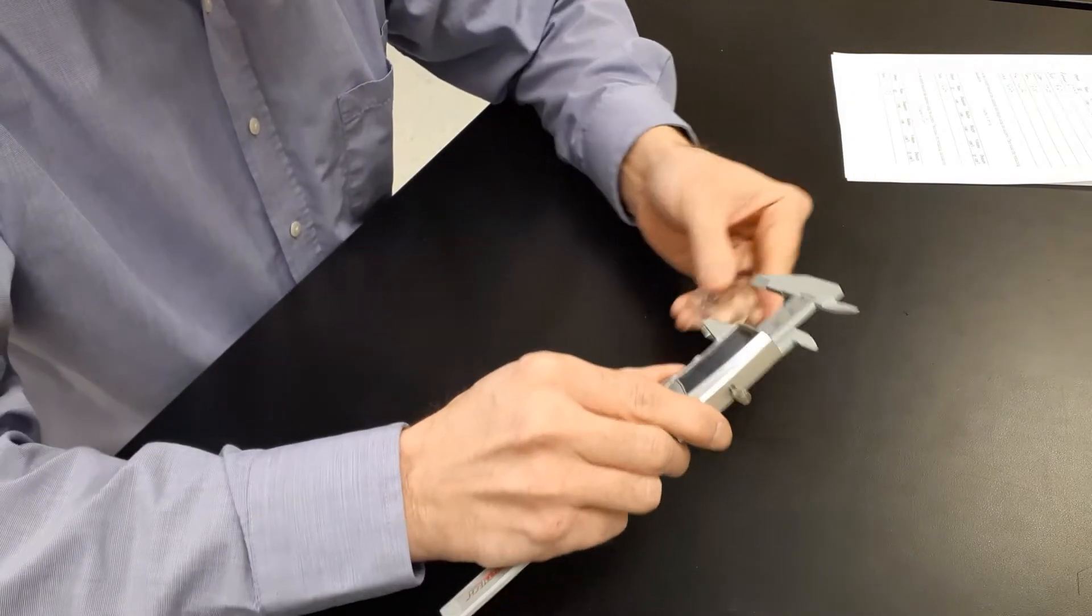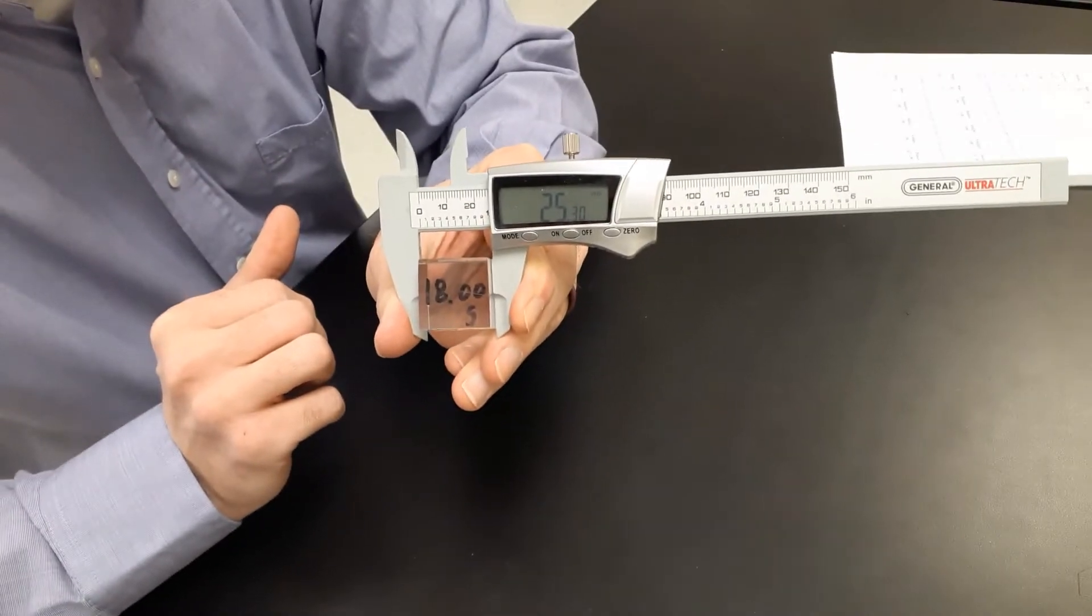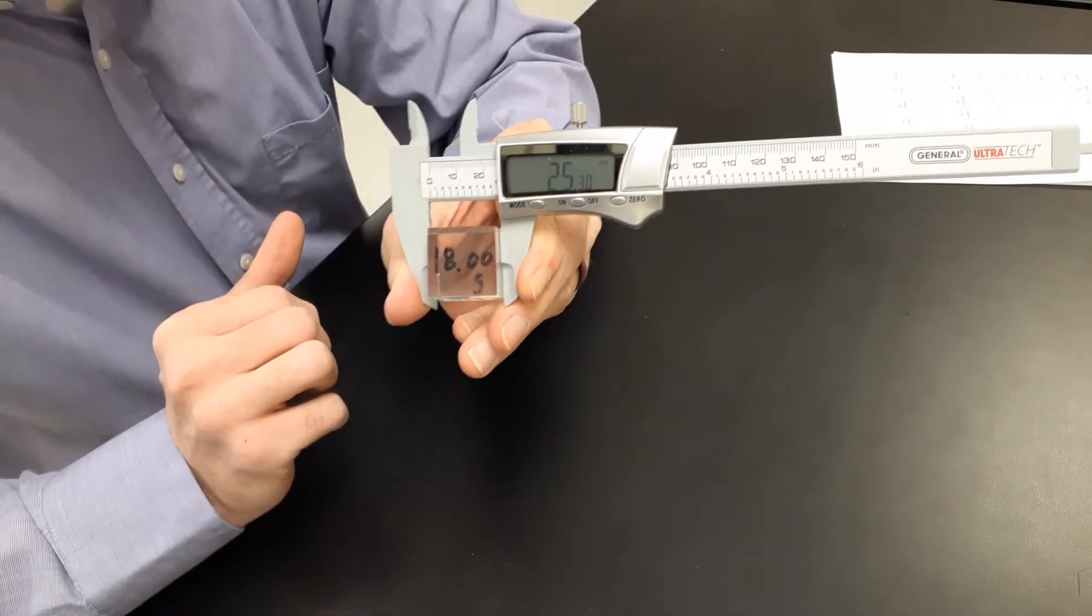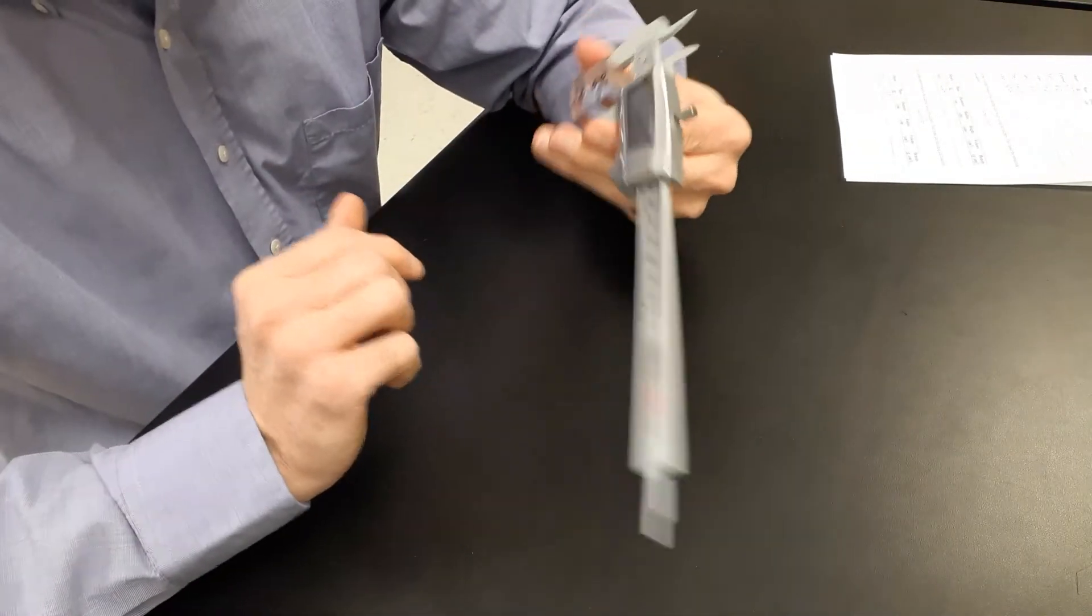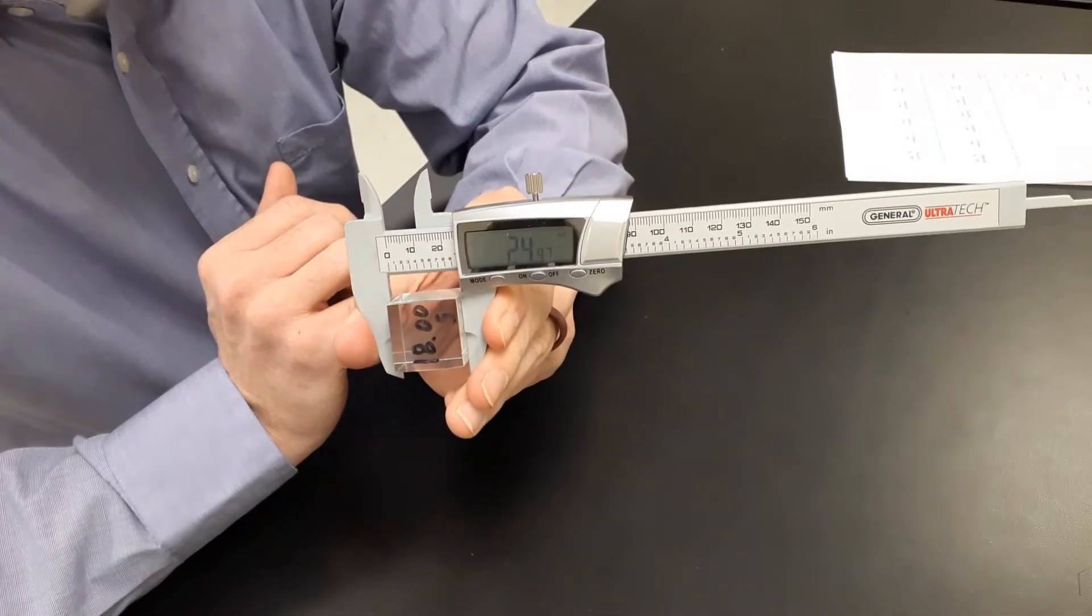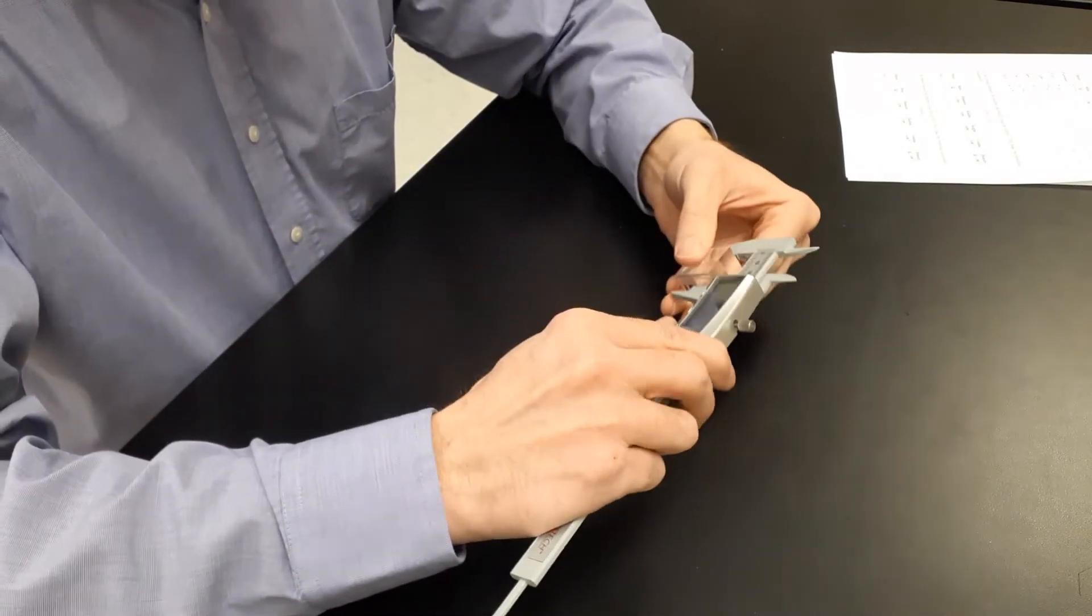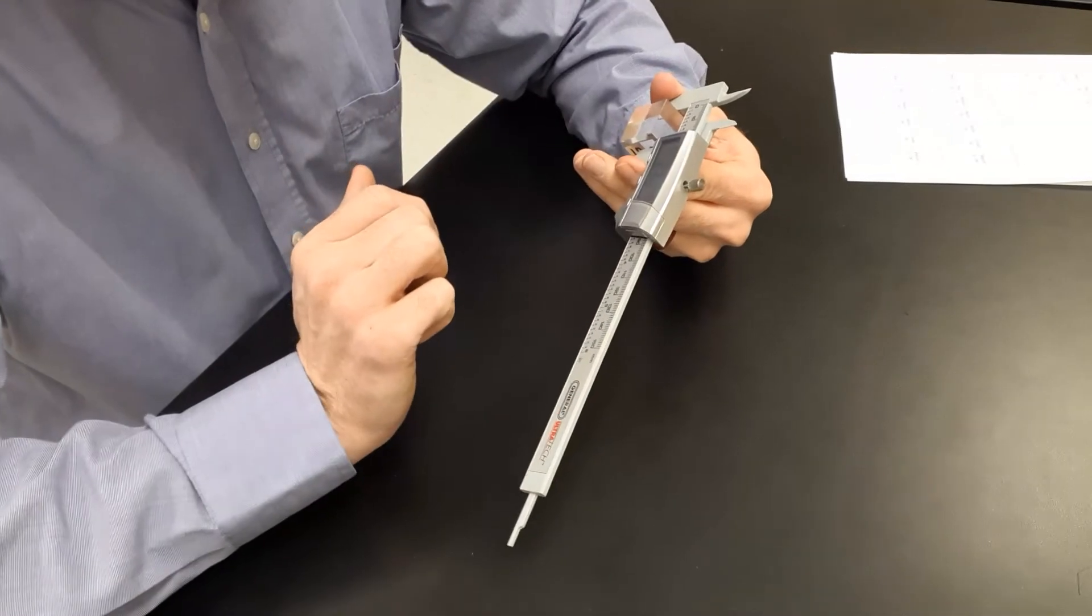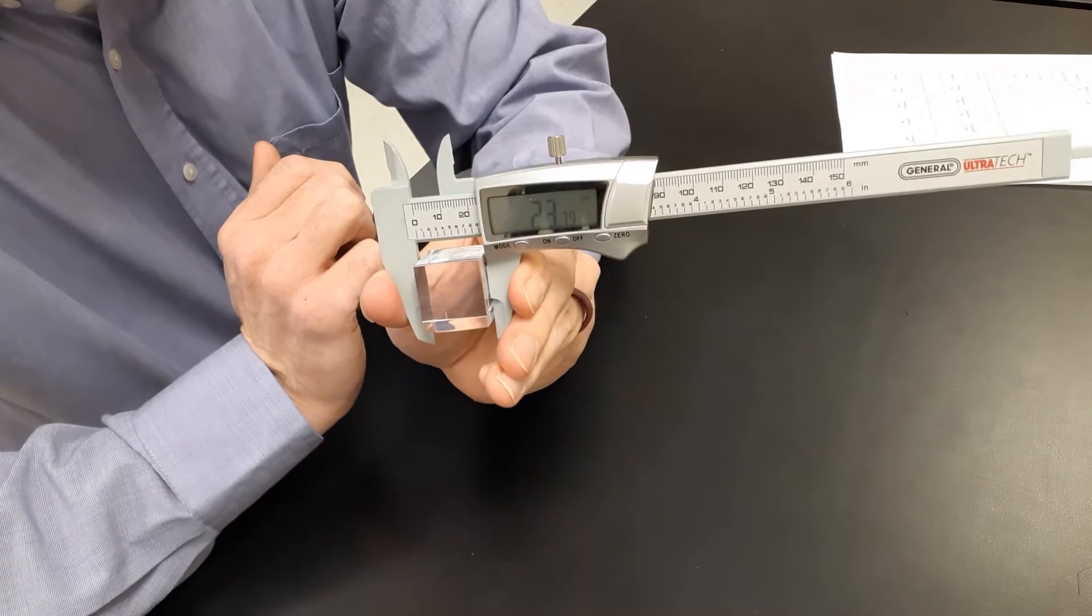Now I'm going to take the plastic block. If I can hold it steady here. First measurement, 25.27 millimeters, 25.27. Next measurement, 24. I'm going to double check myself here, 24.96 millimeters, 24.96. And then one last measurement, 23.80 millimeters, 23.80.